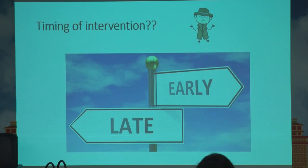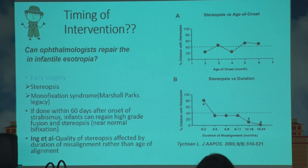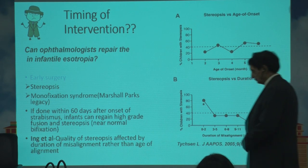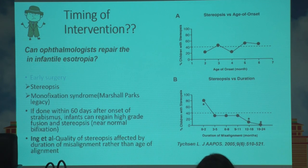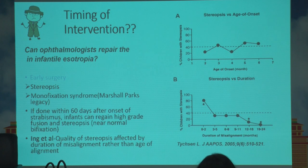The first debatable topic is the timing of intervention — whether we should intervene early or late. This debate started from the question of whether, as ophthalmologists, we can repair the neurological developments which are delayed or not progressing normally in patients with infantile esotropia. With early surgery, if you are able to align the eyes earlier, obviously the stereopsis and binocularity development would be better.